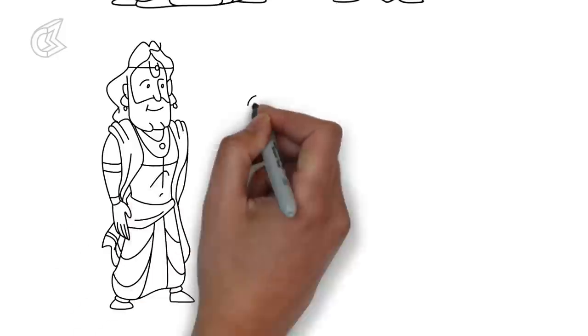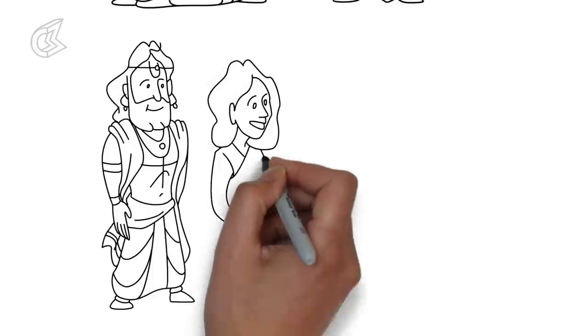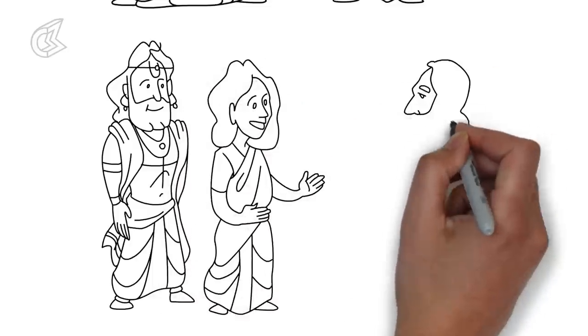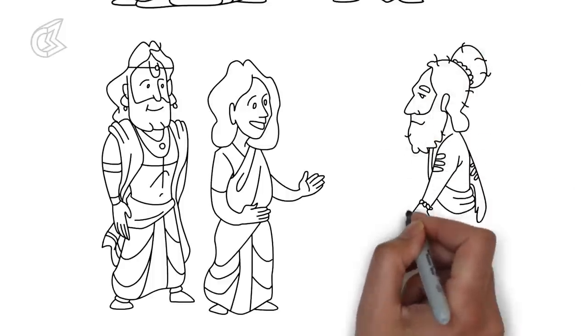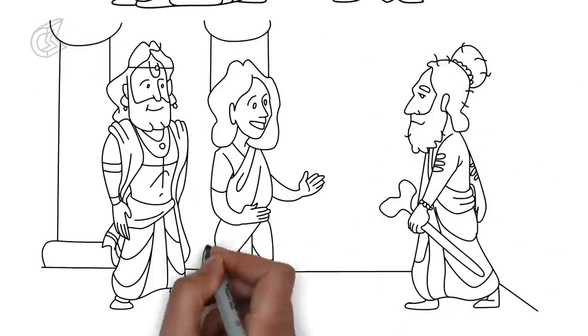Vyasa came when Satyavati called upon him. She asked him to father the children of Ambika and Ambalika. Bhishma was relieved at the thought that the throne of Hastinapur will not go empty.